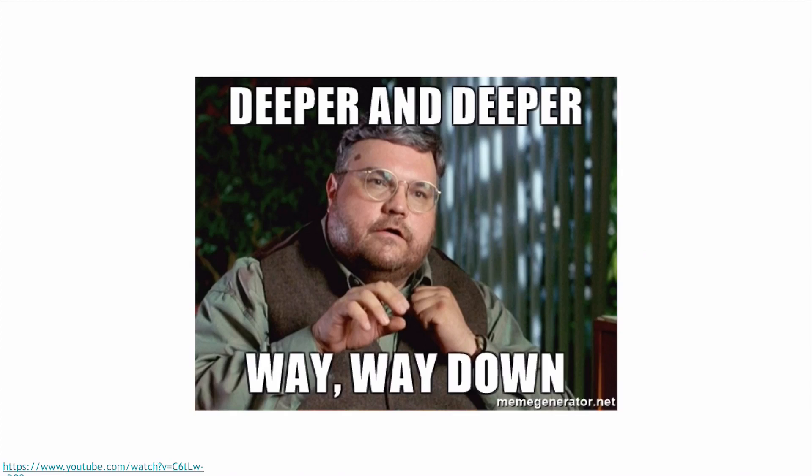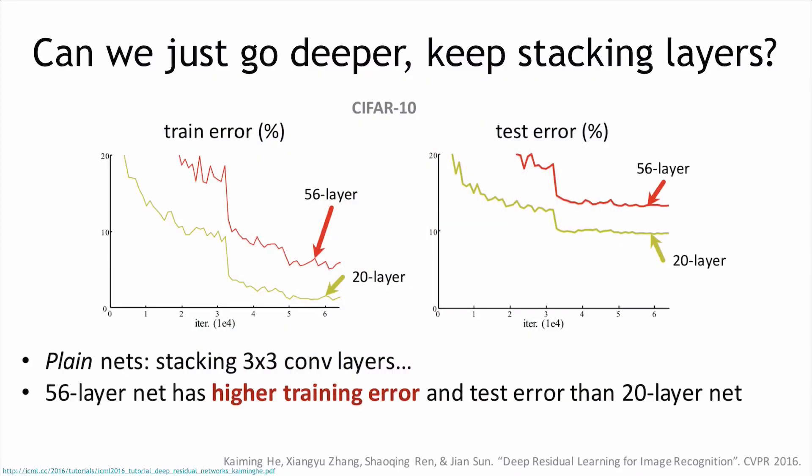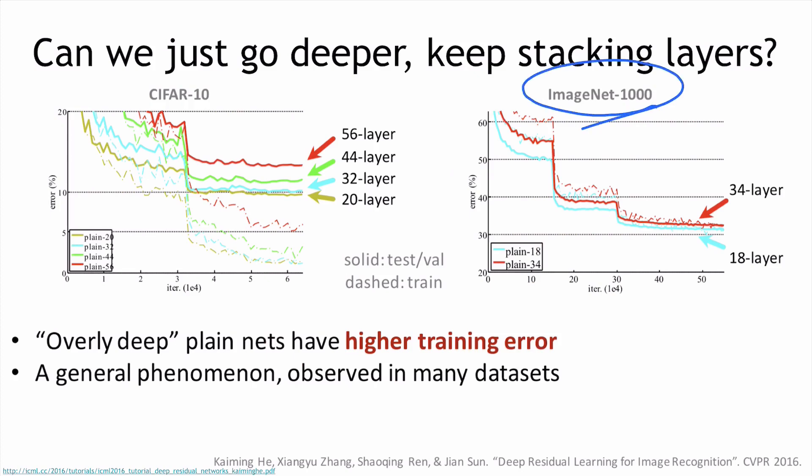Can you just go deeper and deeper and way way down? Unfortunately, the answer is no. Based on the experiments on the dataset called CIFAR-10, they use the different size of layers: 56 layer and 20 layer. This is iterations and this is error. Surprisingly, if you are using 56 layers, the error and training error is higher, not only training but also test error is higher than just the 20 layer. He also tried with other dataset like ImageNet, and then it has a very similar result. 34 layer and 18 layer, 18 layers works better than 34 layers. Why this happens?